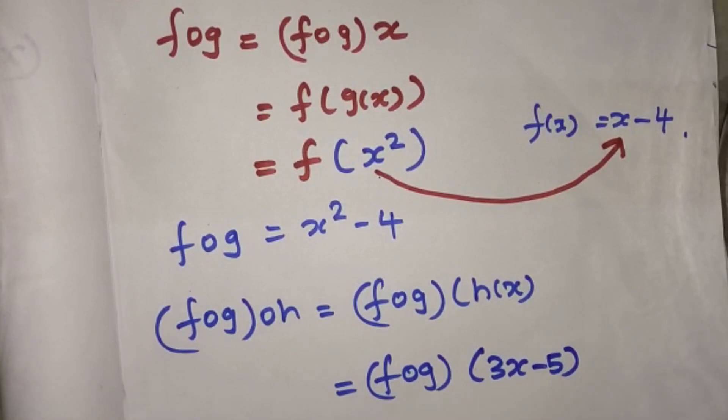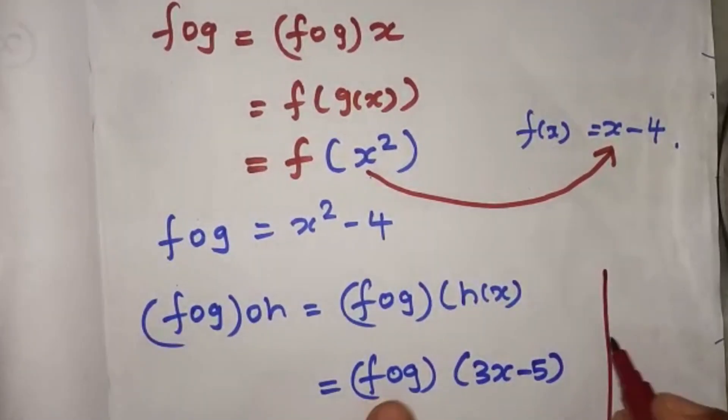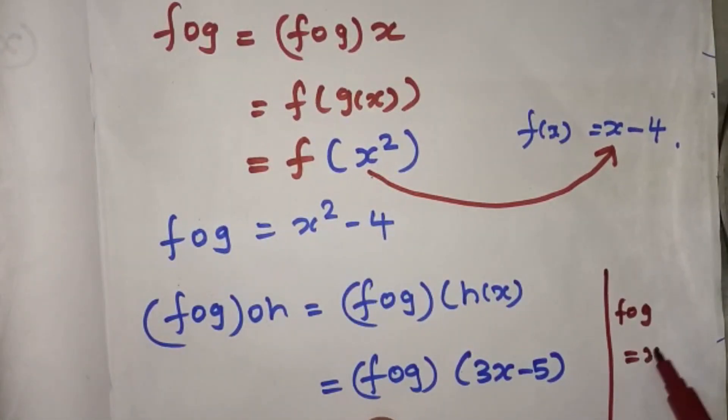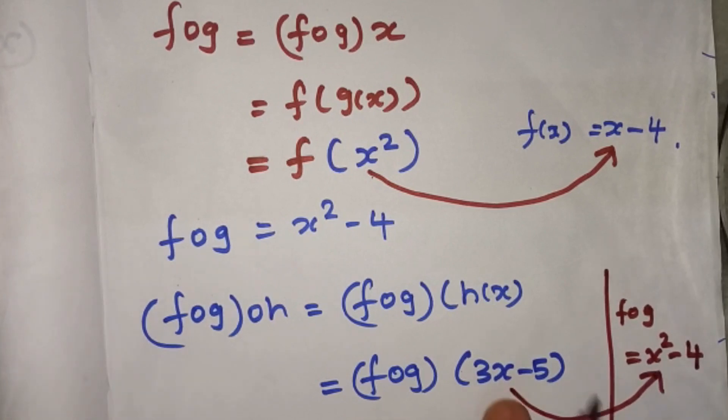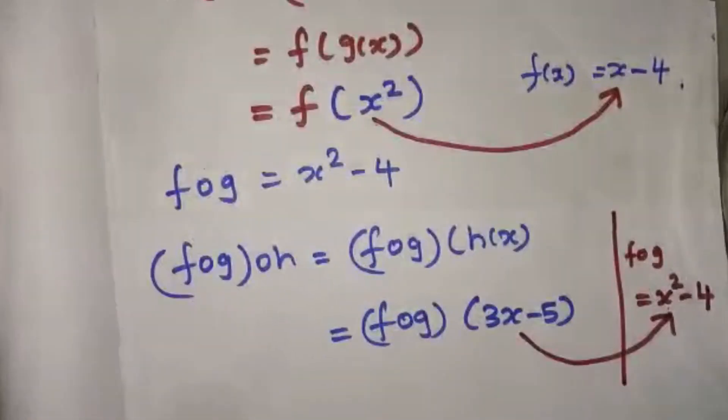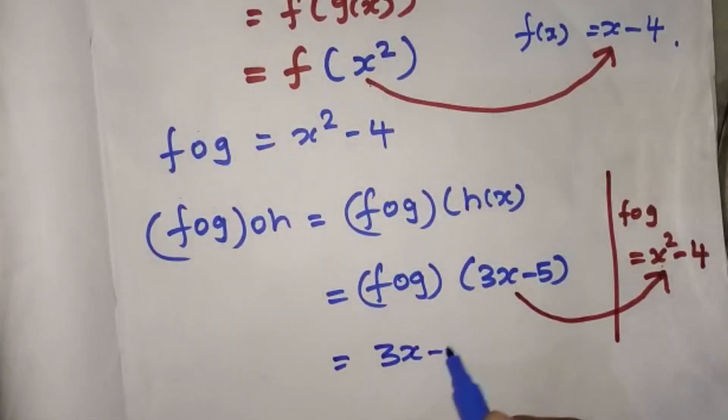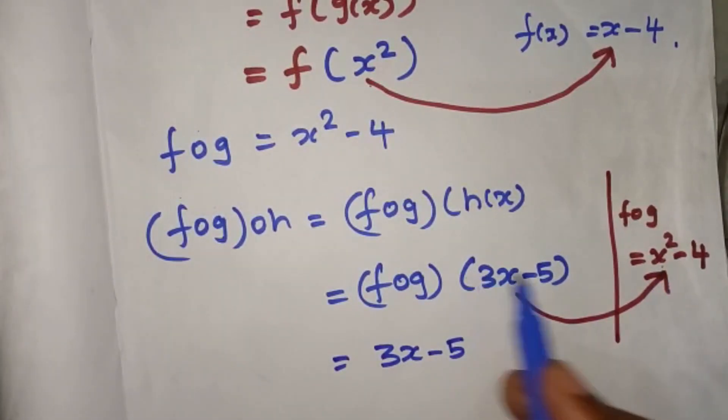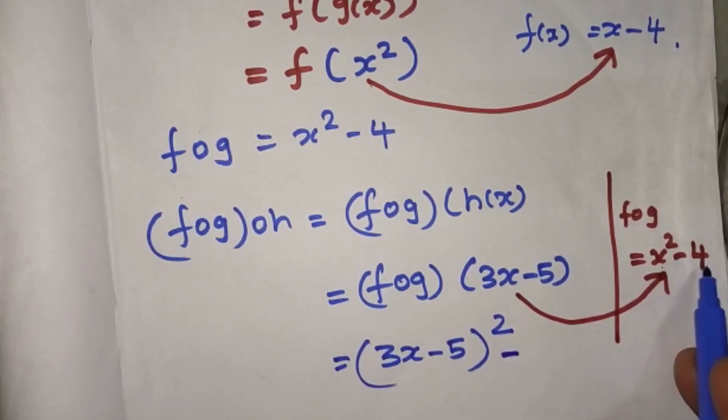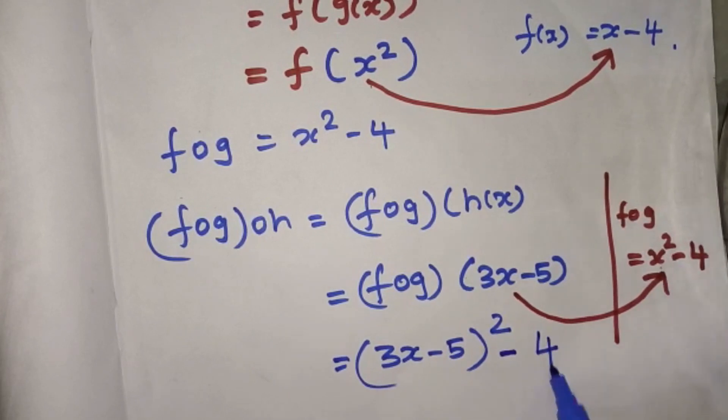Now f of g, what is f of g? x square minus 4.